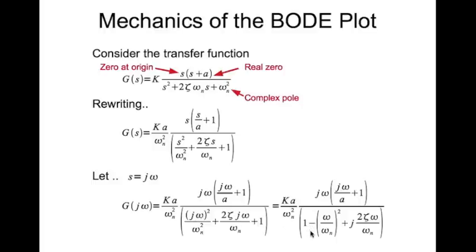This is the real part of this number. This denominator becomes a complex number — this is the complex part and this is the real part. Similarly here, this is the real part and this is the complex part. This number only has a complex part. Now this constant here is called the Bode gain.